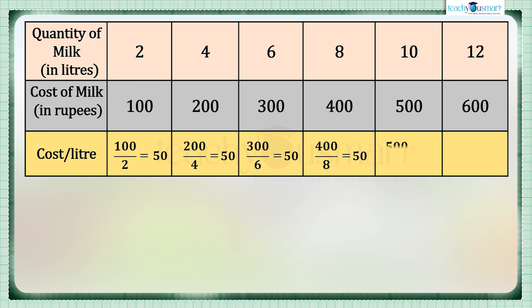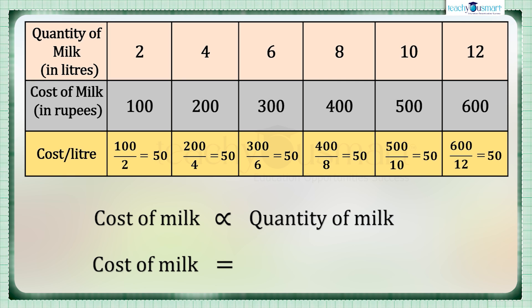See here, the cost per liter in all cases are same. That is, the cost of milk and quantity of milk is directly related, or they are in direct proportion. And here the proportionality constant is 50, which is the cost per liter.